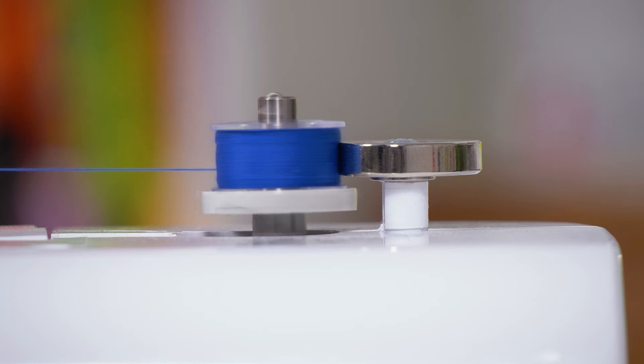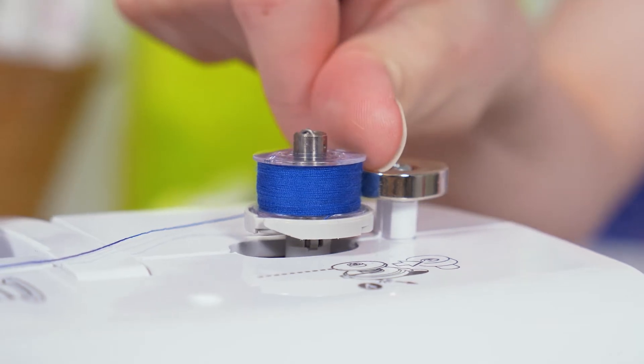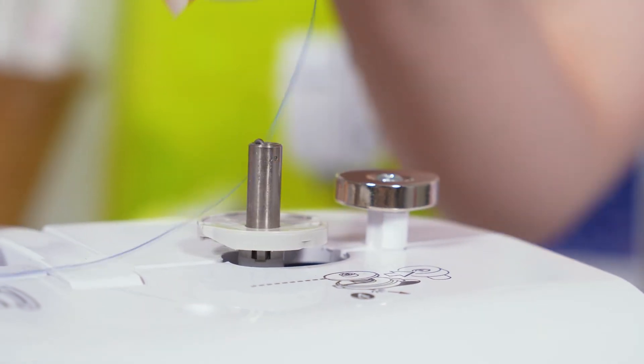The bobbin will stop winding automatically when the thread reaches the stopper. Alternatively, you can simply stop it when you want by taking your foot off the control or by pressing the start-stop button. Snip the thread and push your bobbin winder to the left to switch back to sewing mode.